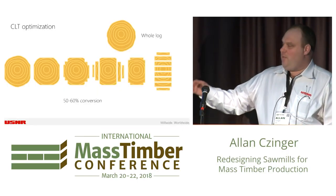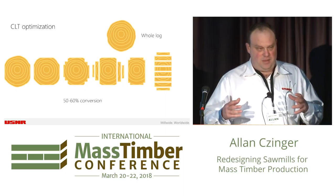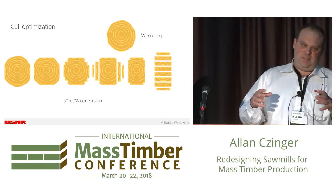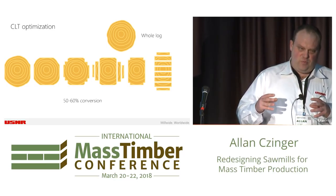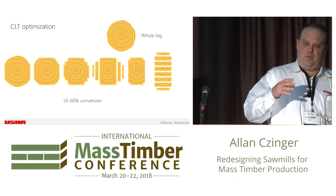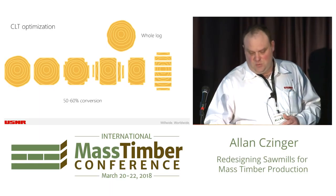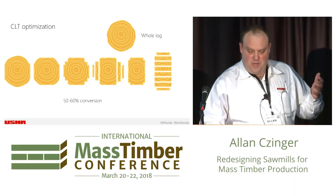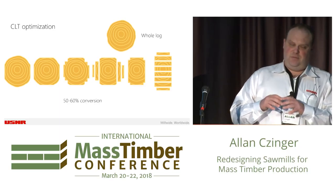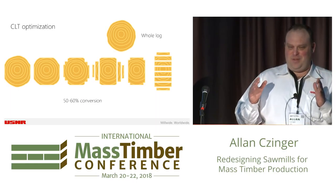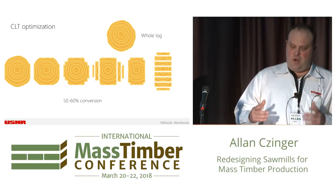This is a classic cut pattern on a log showing the concept of recovery. A typical sawmill starts with a log and gets 50 to 60% conversion — meaning 60% of the log's volume will become lumber, and the rest will be sawdust, chips, and bark. A major factor affecting that is the products you choose to cut. If you cut a limited number of sizes and products, it limits your opportunity for recovery.